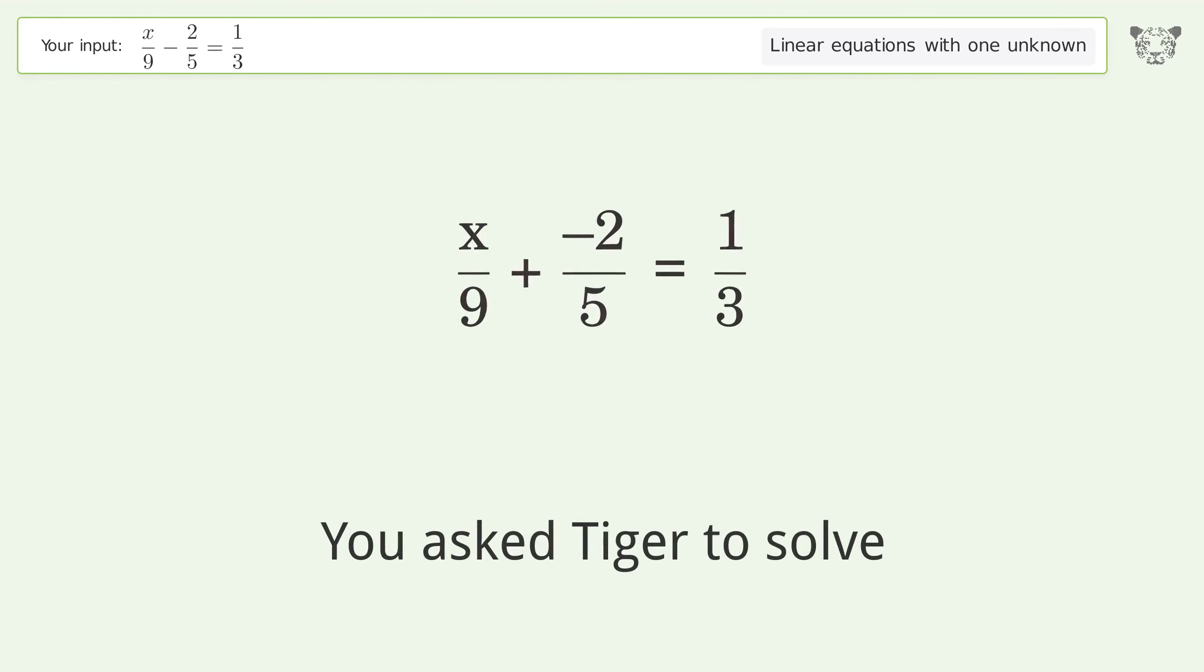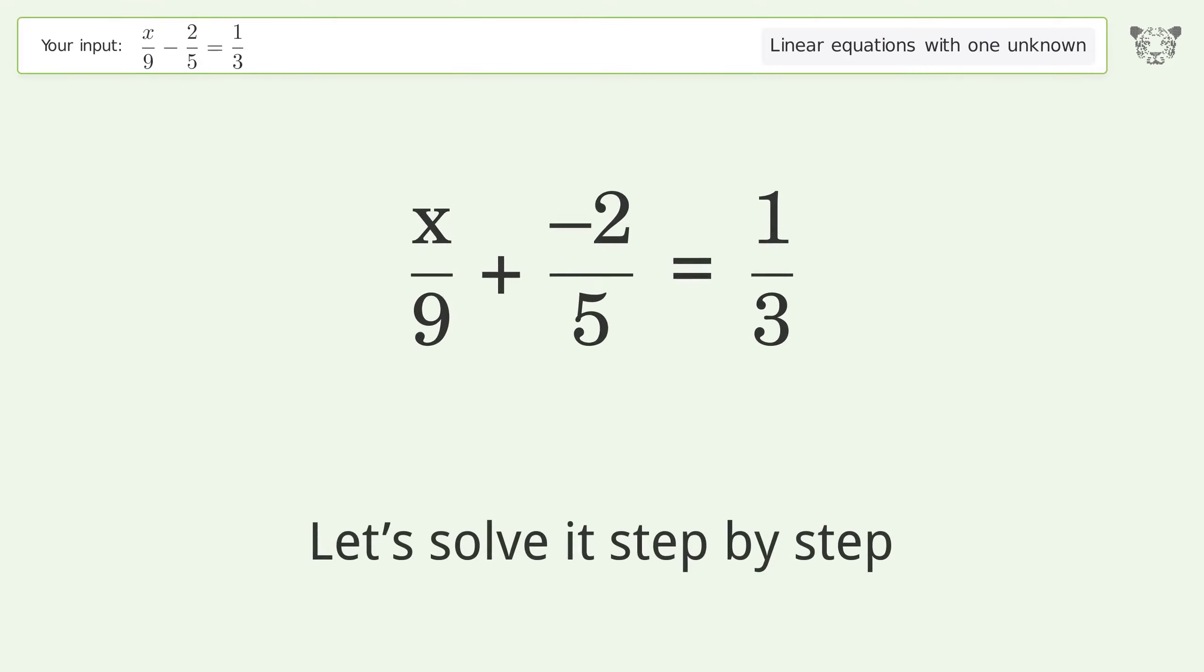You asked Tiger to solve this. This deals with linear equations with one unknown. The final result is x equals 33 over 5. Let's solve it step by step.